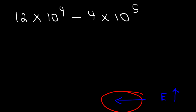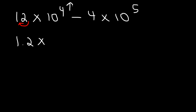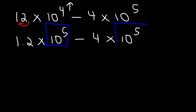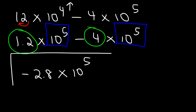Likewise, if you move the decimal to the right, you need to decrease the exponent so the value remains the same. Moving the decimal one unit to the left, 12 becomes 1.2 and the exponent increases by 1, giving 1.2 times 10 to the 5. Now 1.2 minus 4 equals negative 2.8, so the answer is negative 2.8 times 10 to the 5.